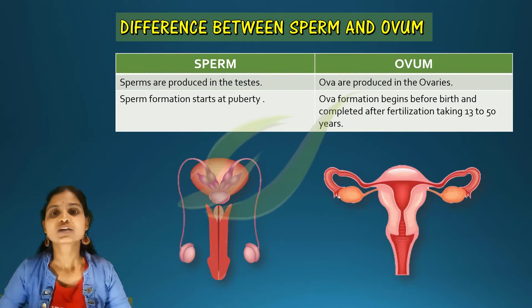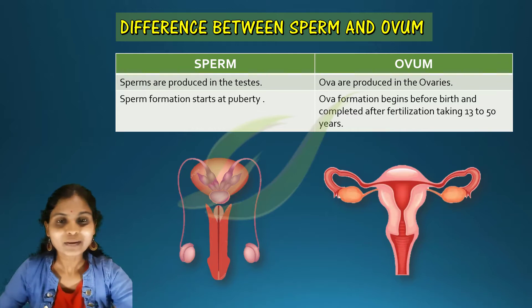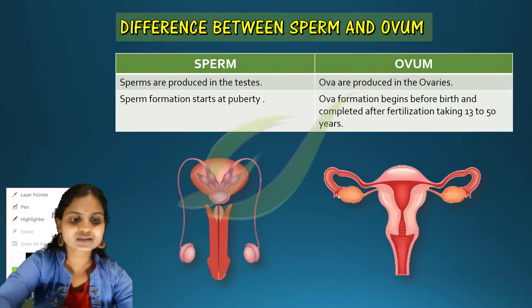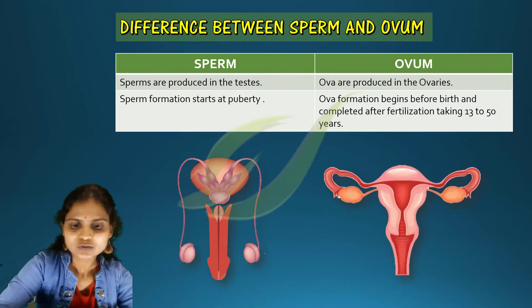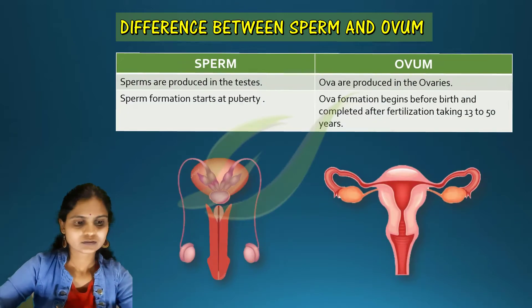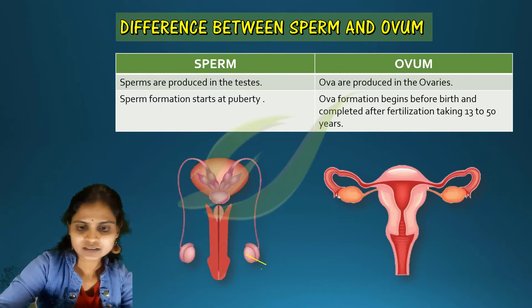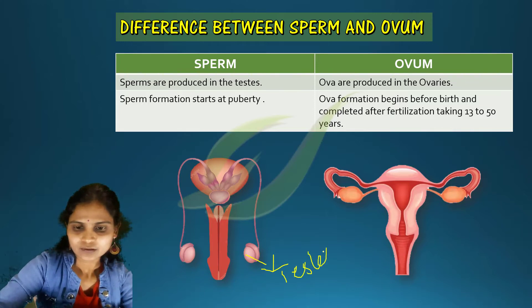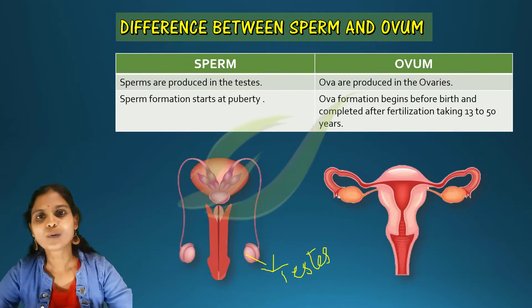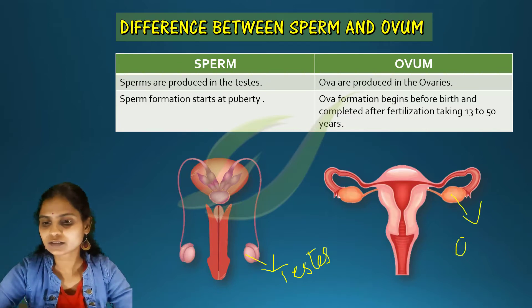Sperms are produced in the testes, so the testes is a male gonad. Ova are produced in the ovary, and ovaries are the female gonads.